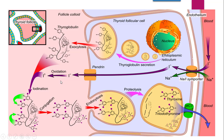Then iodine and the thyroglobulin residue combine through conjugation. Adjacent tyrosyl residues get paired — one tyrosyl with another — and this pairing forms T3 and T4. These are then separated by proteolysis; the globulin residue is separated, and thyroxine and triiodothyronine are secreted into the blood through MCT — monocarboxylate transporters. These symporters and rough endoplasmic reticulum are three important parts to mention in the synthesis of thyroid hormones.